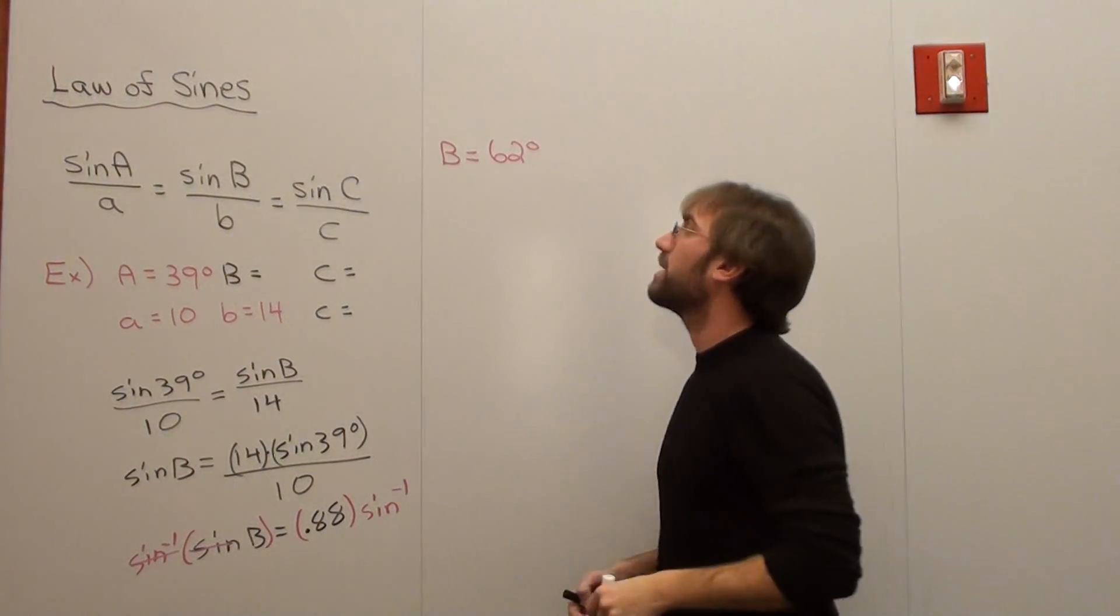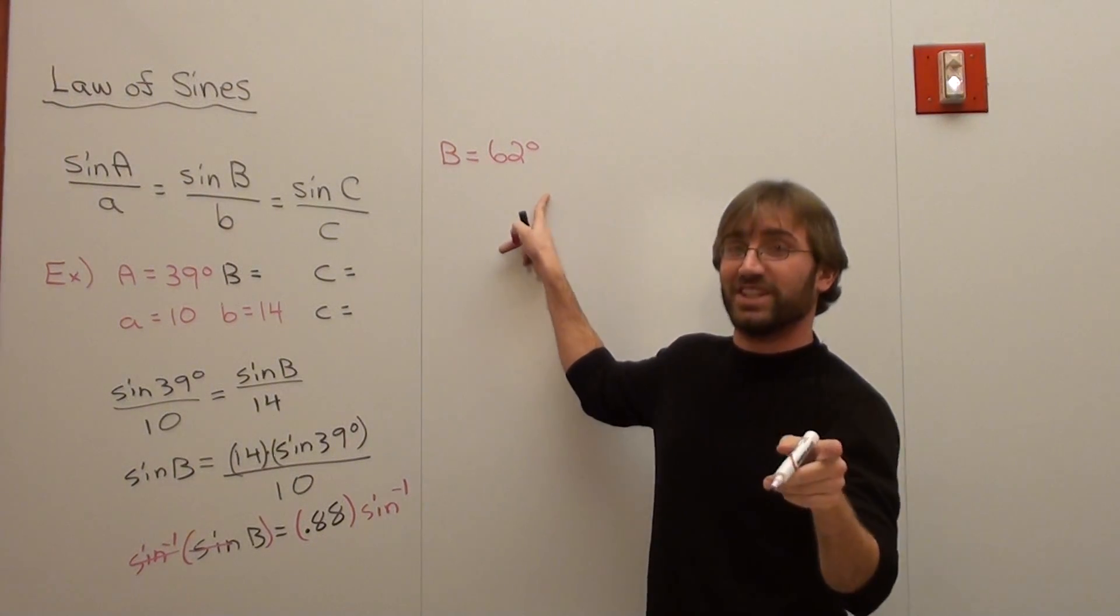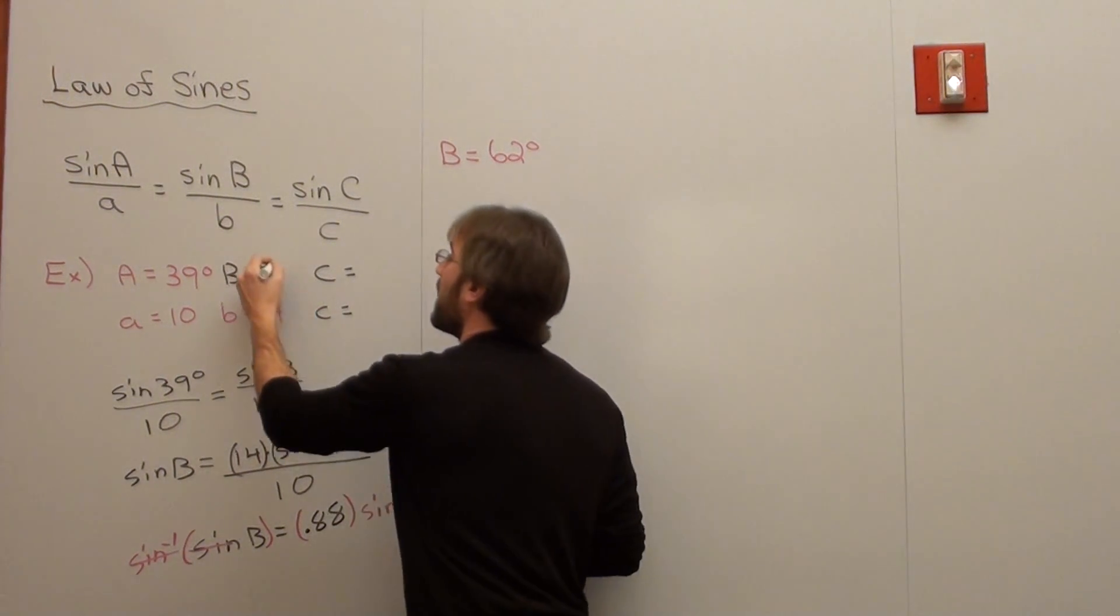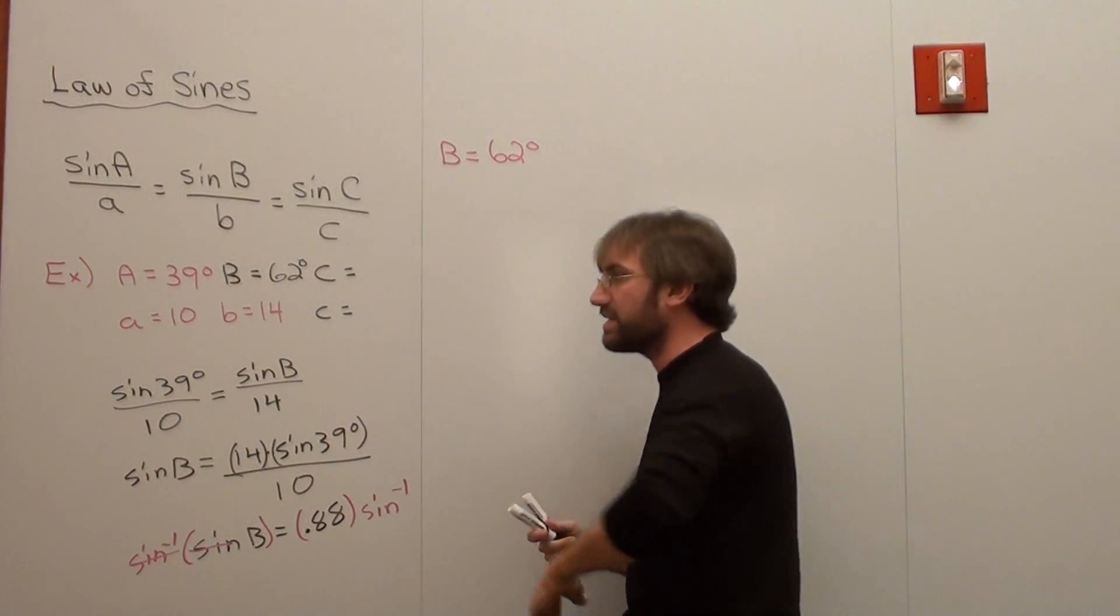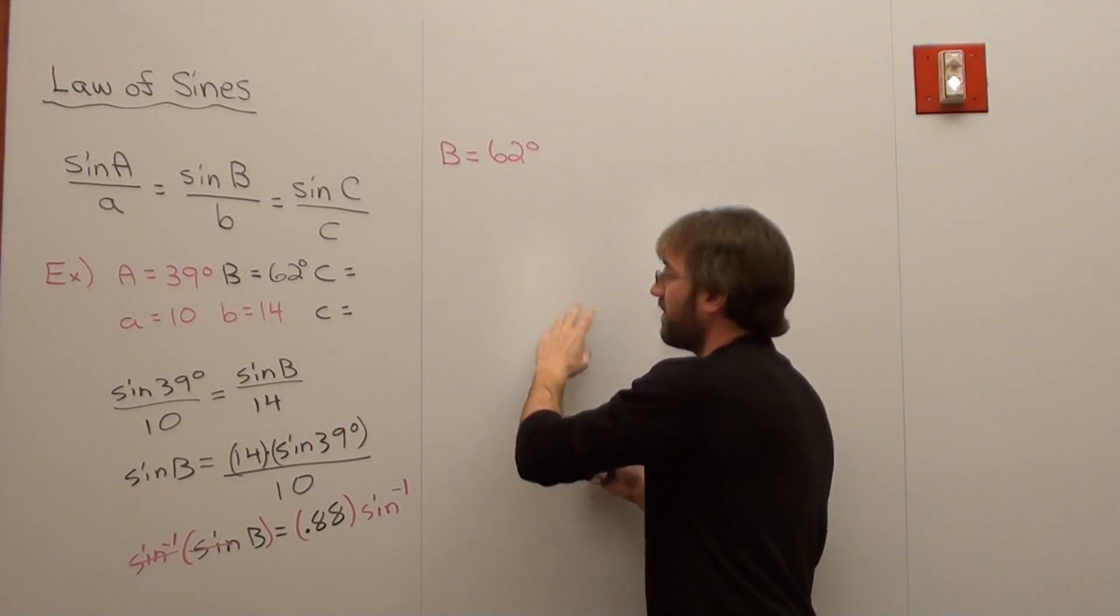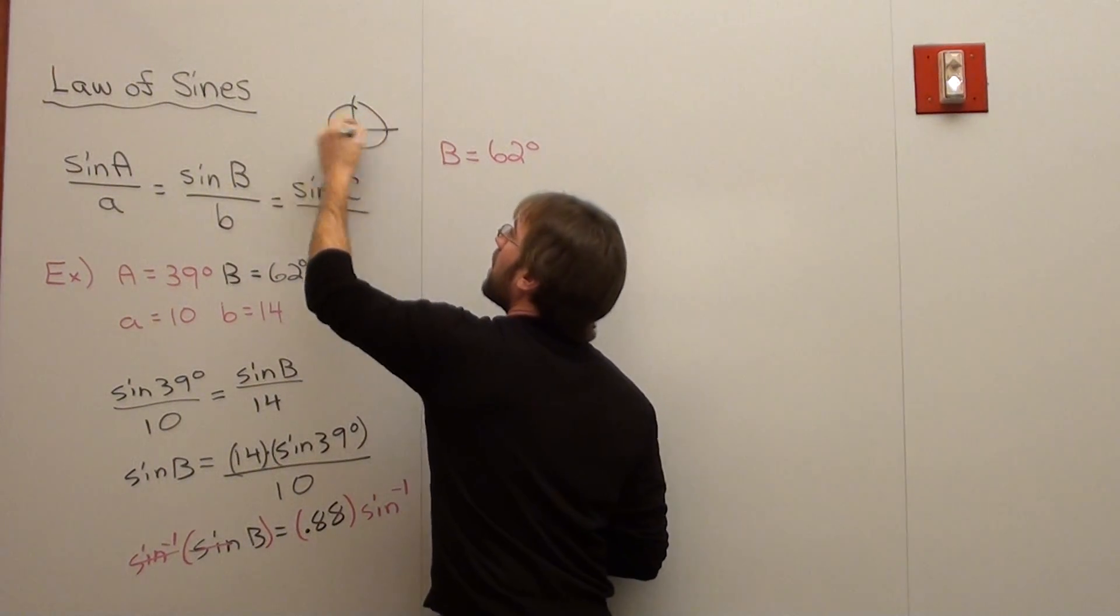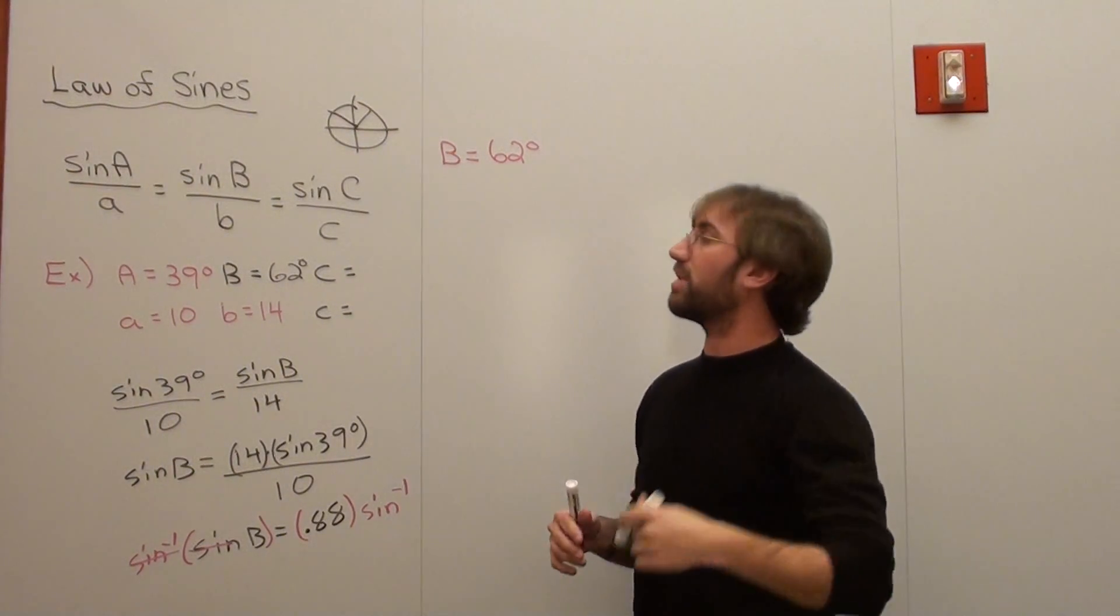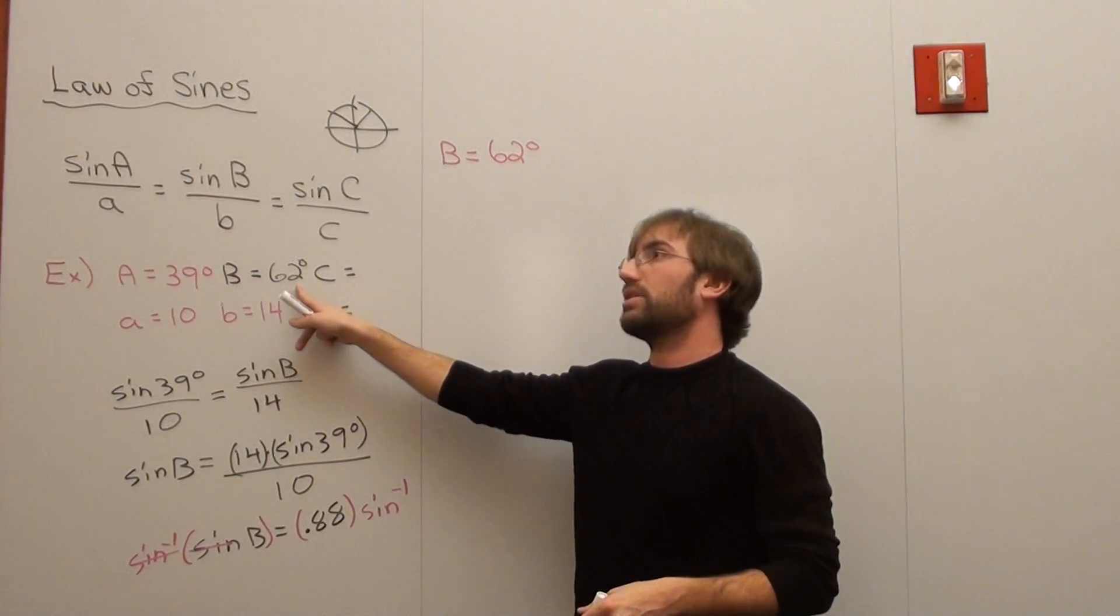There is something else to note, though. The inverse sine of 0.88 is not only 62 degrees, but it's 180 minus 62 degrees. Because the sine value 0.88 could be on this quadrant, or it could be on this quadrant. And in that case, that deals with reference angles. So it would be 180 minus 62 degrees. So this could actually be 118 degrees.